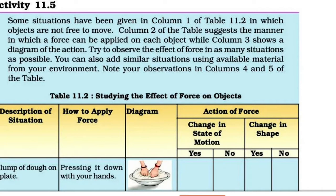Some situations have been given in column 1 of Table 11.2 in which objects are not free to move. Column 2 of the table suggests the manner in which a force can be applied on each object, while column 3 shows a diagram of the action. Now we have to do Activity — Table 11.2, studying the effect of force on objects. Column 1 is the description of the situation.